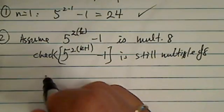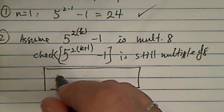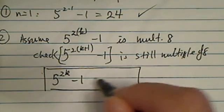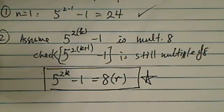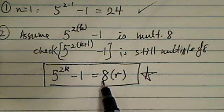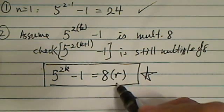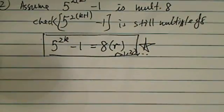So I think the critical part for this problem is over here. You realize 5 to the 2k minus 1 is a multiple of 8. This is the critical step for me. If it's a multiple of 8, we write it as 8 times r, where r equals 1, 2, 3, and so on, all the natural numbers.